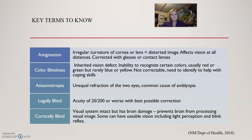Anisometropia is unequal refraction of the two eyes and is a common cause of amblyopia. Legally blind is defined as an acuity of 20/200 or worse with best possible correction. And cortically blind means the visual system is intact but there has been brain damage that prevents the brain from processing the visual image.